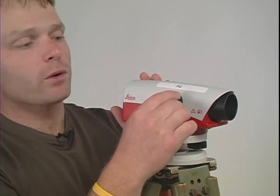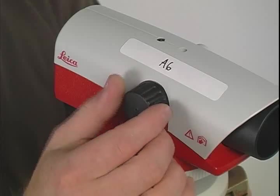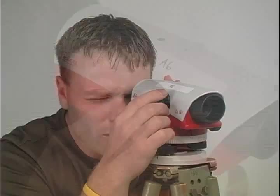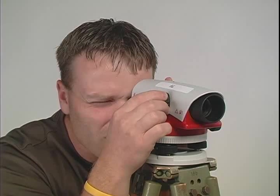The next knob is the focus knob. And the focus knob is this knob here. Rotating this knob and looking through the telescope, this will adjust so that we can see things clearly in the telescope.